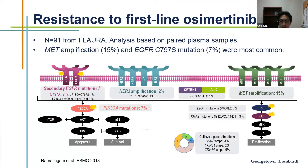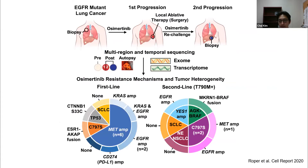Targeted therapies are not able to cure disease. Various mechanisms of resistance happen despite initial very nice responses. These can include activation of secondary signaling pathways, fusion events, or even histological transformation — such as non-small cell transforming into small cell lung cancer. At that point, we need to understand what are the drivers of resistance, which can sometimes help figure out the best treatment for that patient.